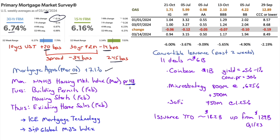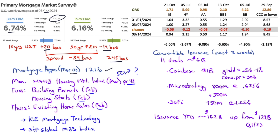Mortgage apps ending March 8th up 7.1%. This week we get some housing information: the NAHB housing market index for March — previous read was 48 which is in contraction. Does it break 50 and go into expansion? That would help the home builders, although a lot of the euphoria is built in already. The next leg up is when rates do start to get cut. Tuesday: building permits and housing starts for February. Thursday: existing home sales for February.